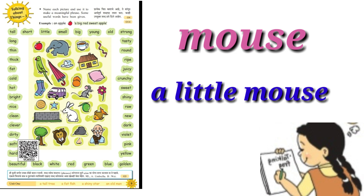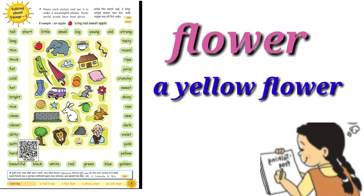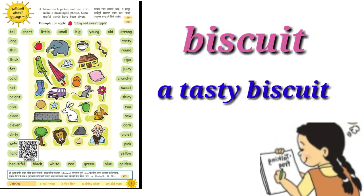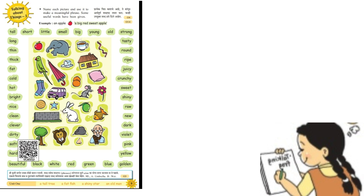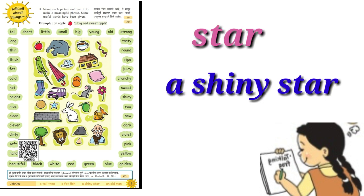Mouse — a little mouse. Flower — a yellow flower. Biscuit — a tasty biscuit. Star — a shiny star.